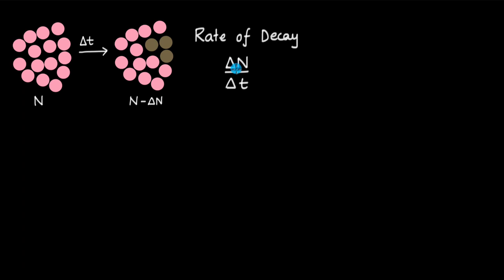In this video we will talk about what this rate of decay depends upon, and how we know if the rate is fast or slow. The number of radioactive nuclei is decreasing with time — we started with N and now have N minus delta n. So delta n represents the final number of remaining nuclei minus the initial number, which is a negative quantity, and therefore we add a minus sign before it.